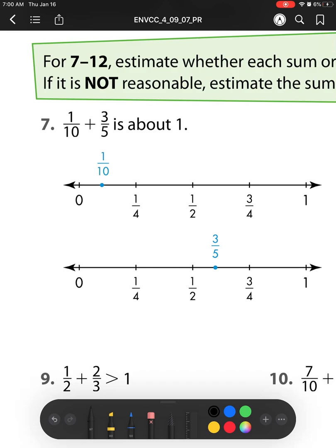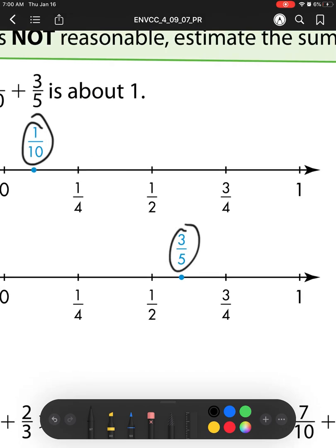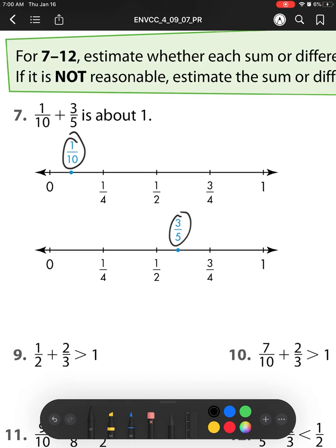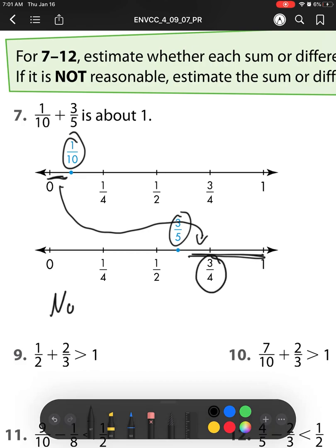So 1 tenth plus 3 eighths. I see 1 tenth here, I see 3 eighths here, and I'm checking to see if the answer is reasonable. I see that we have this much space to get to 1, and we'd be adding that much space. So it doesn't look like adding that together will give me all the way to 1 whole. It looks more like it's going to get me to 3 fourths. So I'm going to say no, it's not reasonable, and my estimate is 3 fourths.